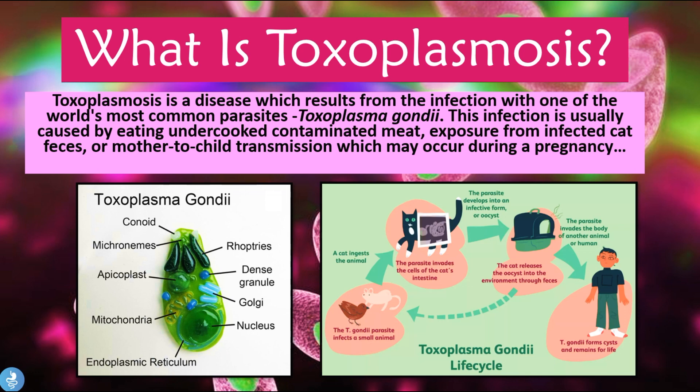So what is toxoplasmosis? Toxoplasmosis is a disease which results from the infection with one of the world's most common parasites, Toxoplasma gondii. This infection is usually caused by eating undercooked contaminated meat, exposure from infected cat feces, or mother-to-child transmission which may occur during pregnancy. Humans can usually contract the disease by eating undercooked meat, exposure to cat feces, or the fetus may become infected in pregnant mothers who carry the infection.